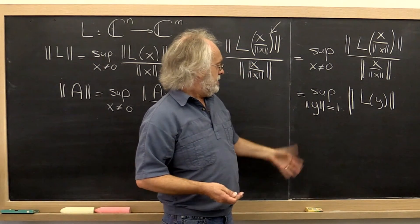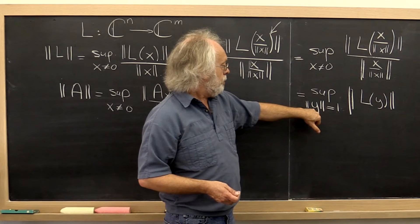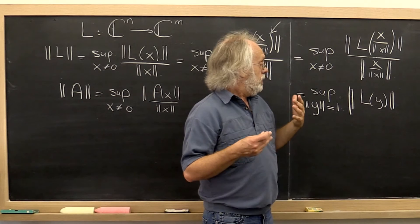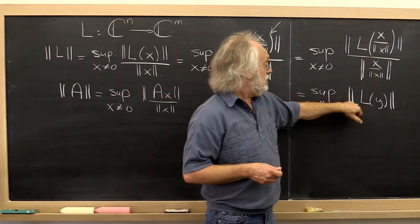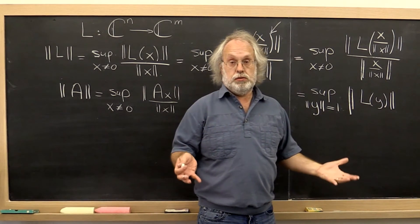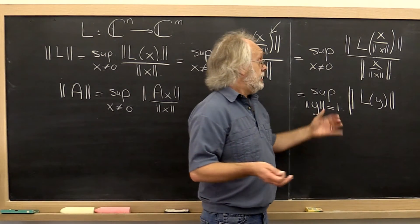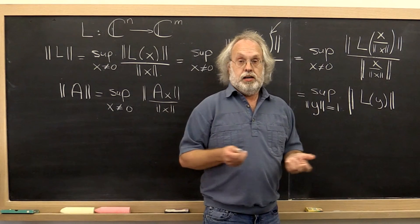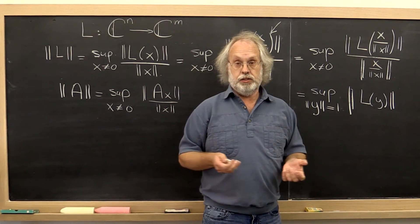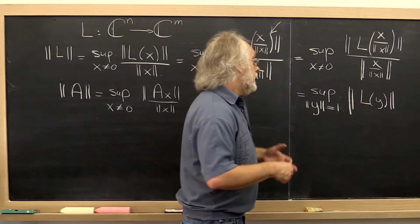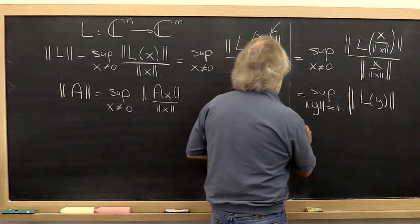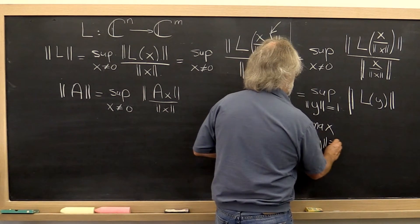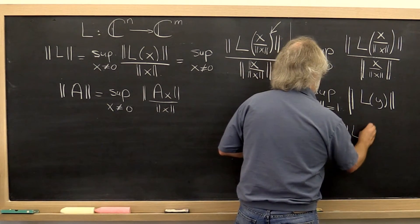The upshot of it is that if you have the supremum over a compact set of a continuous function, and it's not that hard to see that a norm is a continuous function, and that the norm of the linear transformation over y is a continuous function. That comes from the triangle inequality. And as a result, we can actually say, well, this is equal to the maximum over all y equal to 1 of l of y.